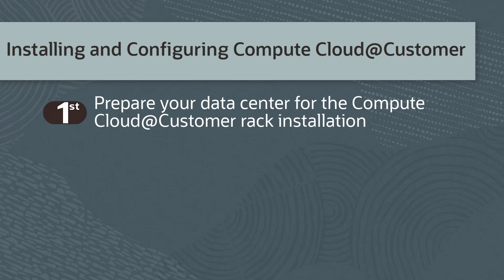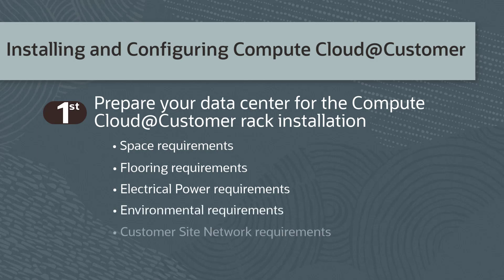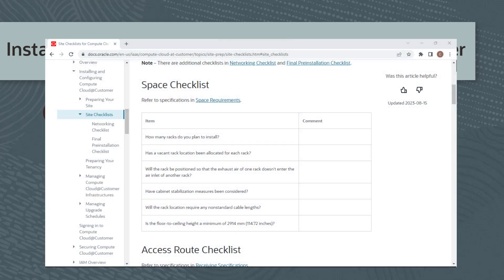Before you can use Compute Cloud at Customer, you must prepare your site for the installation of the rack. Refer to the documentation for instructions on preparing your site. This includes space requirements, flooring requirements, electrical power requirements, environmental requirements, and customer site network requirements. The documentation also includes a site checklist for Compute Cloud at Customer that you can use to track progress as you prepare your site.